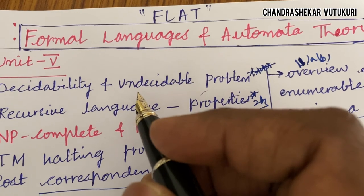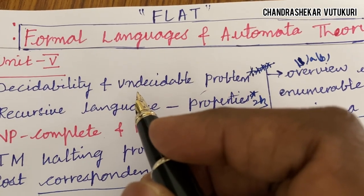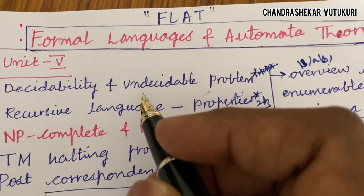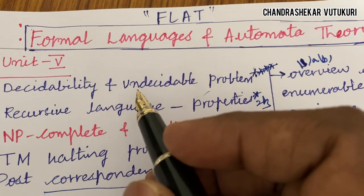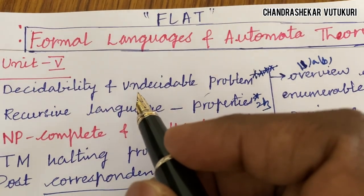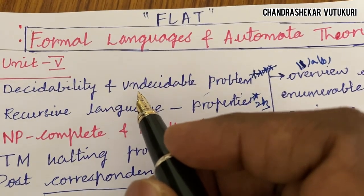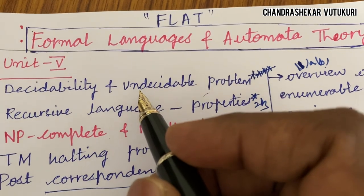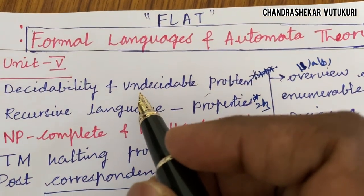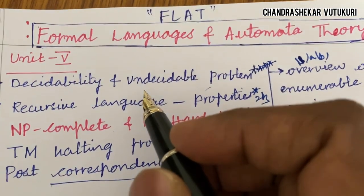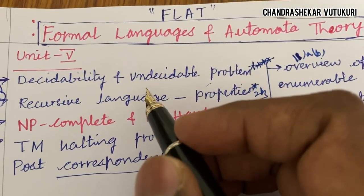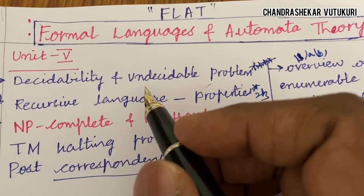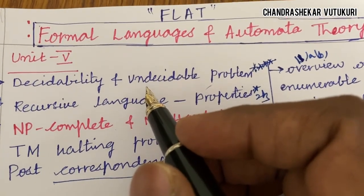Dear students, as per the notification received from JNTUH, this time the question paper pattern consists of Part A and Part B. Part A has short questions — 2 and 3 mark questions — worth 25 marks from all 5 units. The remaining Part B questions from Q2 to Q11 cover all 5 units and consist of 50 marks put together.